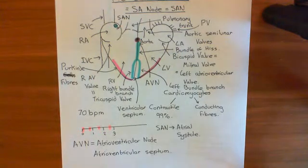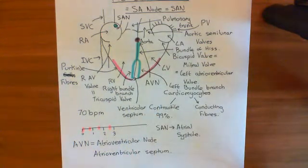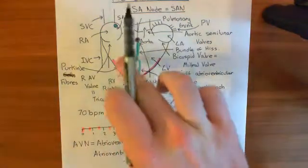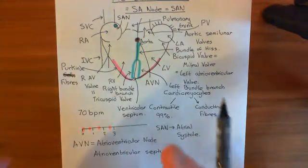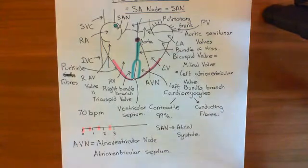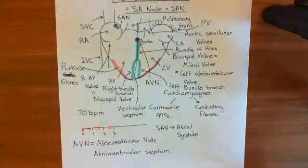These Purkinje fibres are going to propagate the action potential onto the contractile cardiomyocytes of the left and right ventricles. These contractile cardiomyocytes are then going to spread it among one another, and it will propagate up the walls of the right and left ventricles, causing contraction and then ejection of the blood into either the pulmonary trunk or the aorta.